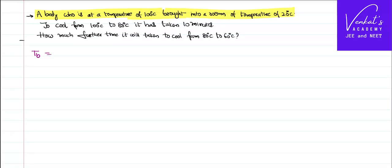The temperature of the body is given as 100 degree centigrade, and the temperature of the surroundings is given as 20 degree centigrade. Note that you need not convert them into Kelvin. The body cools from 100 to 80 degree centigrade in 10 minutes.